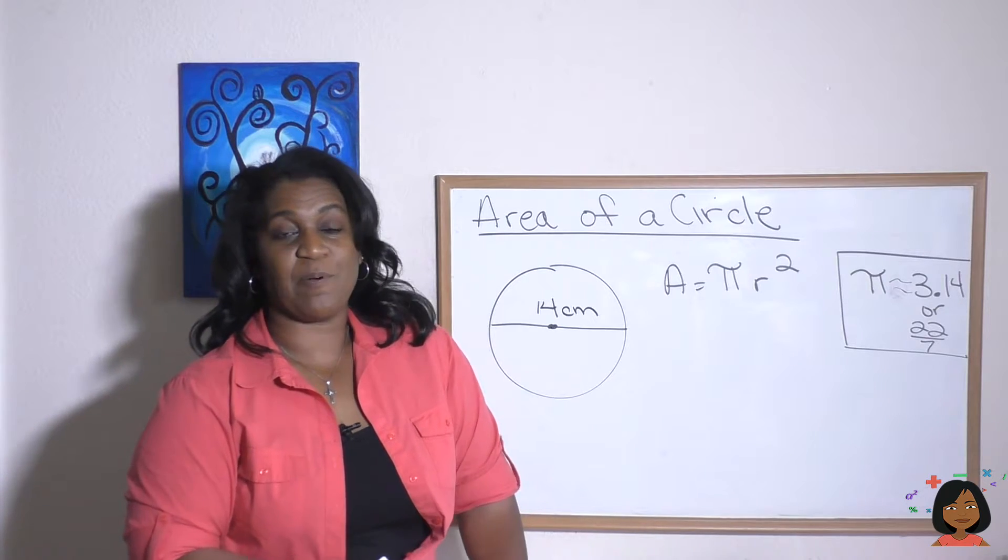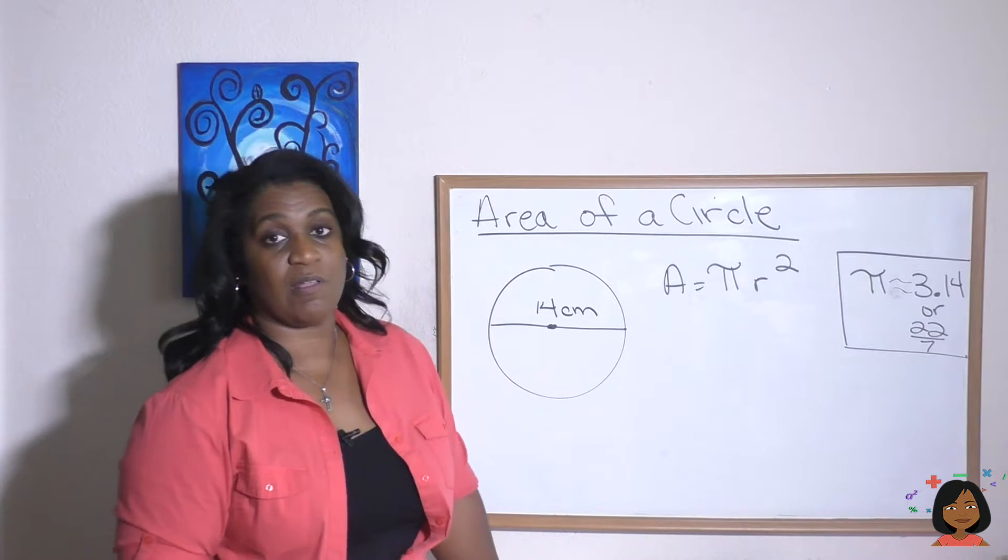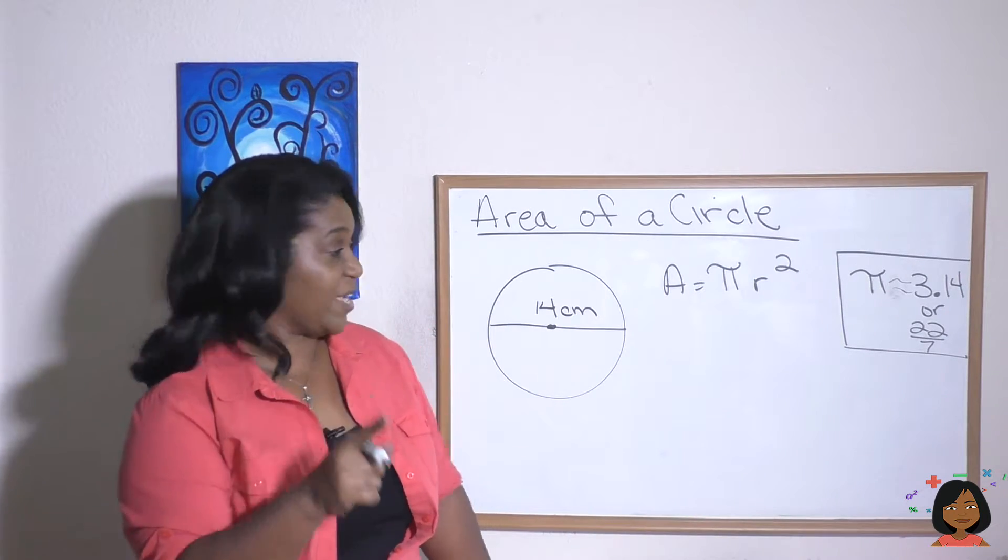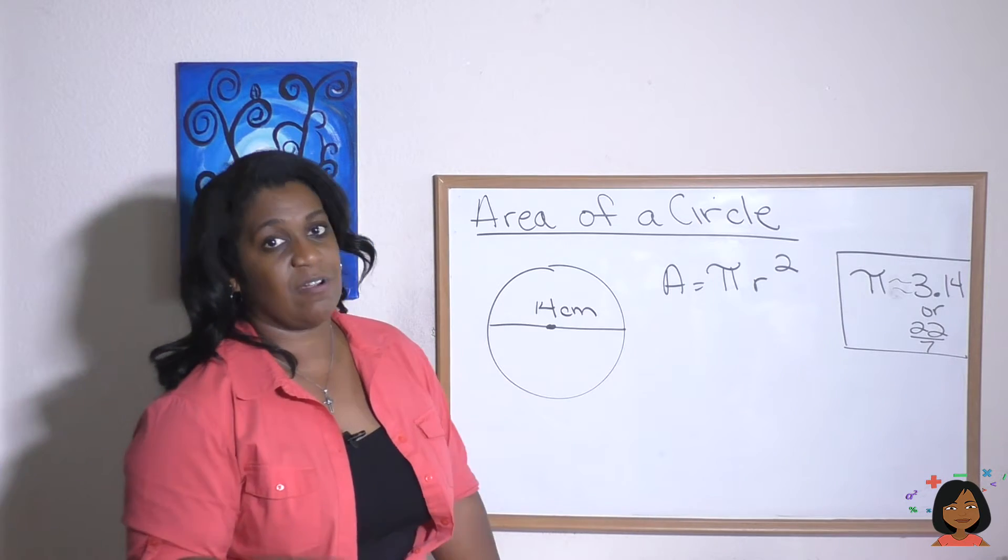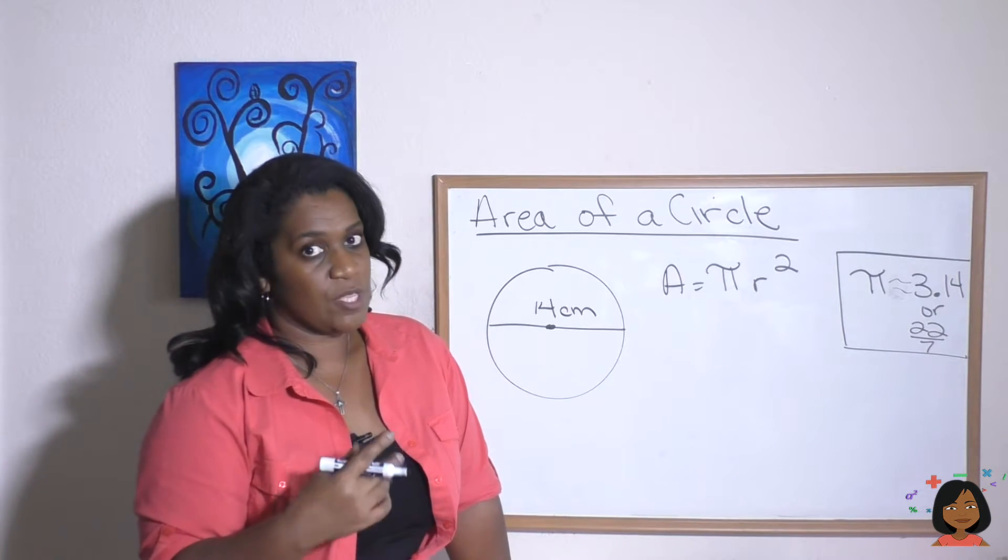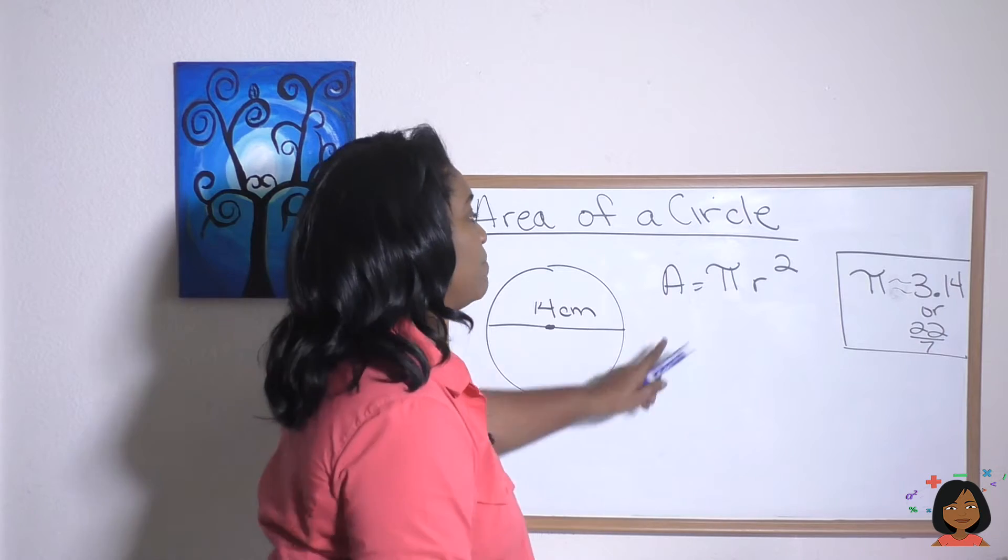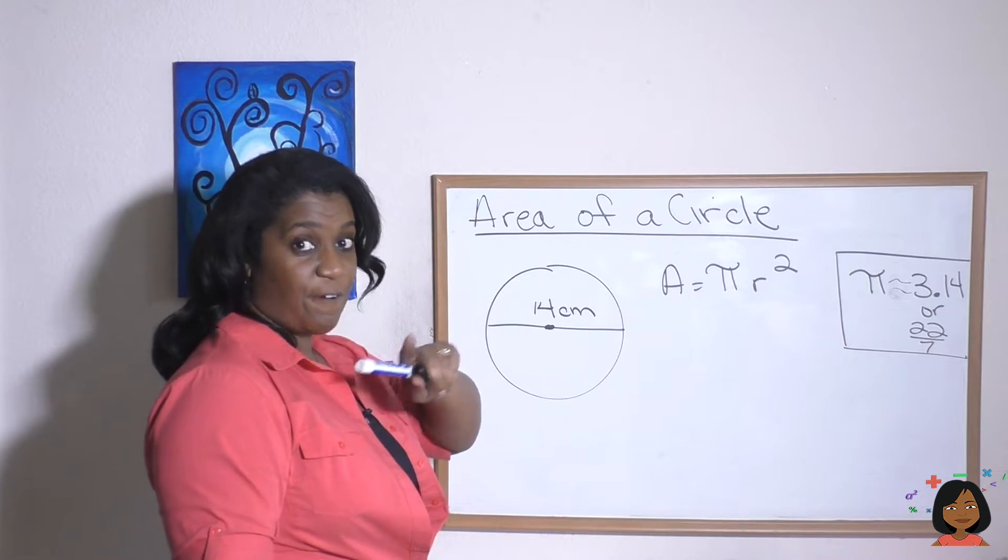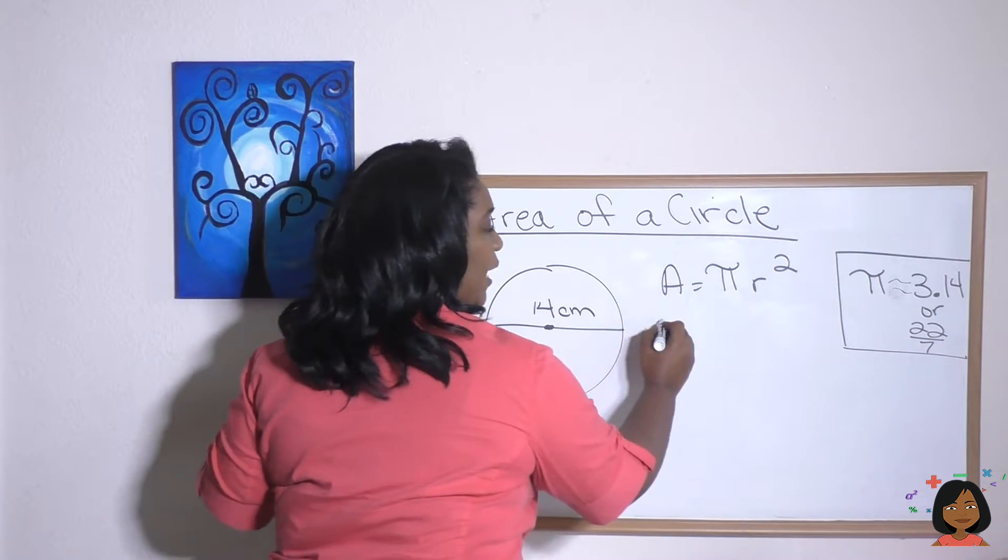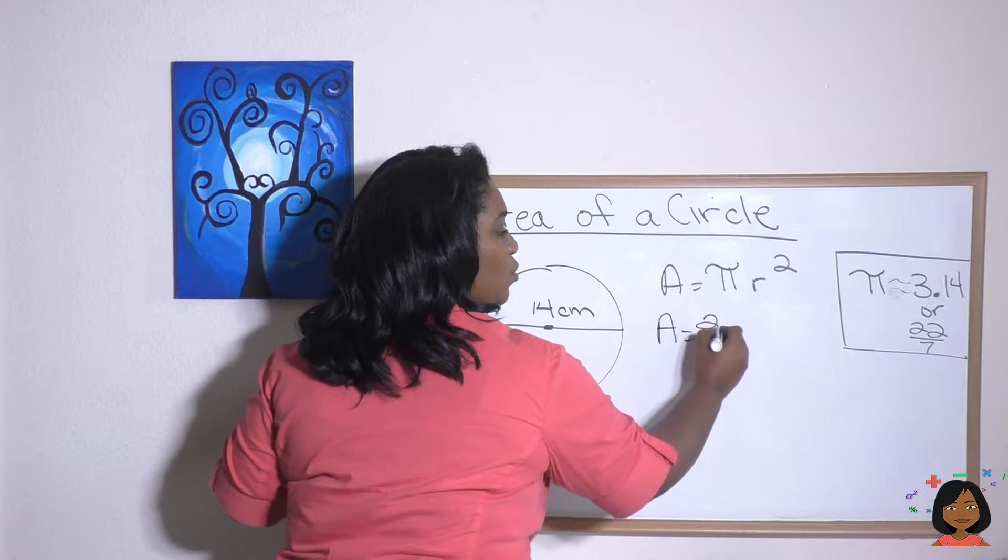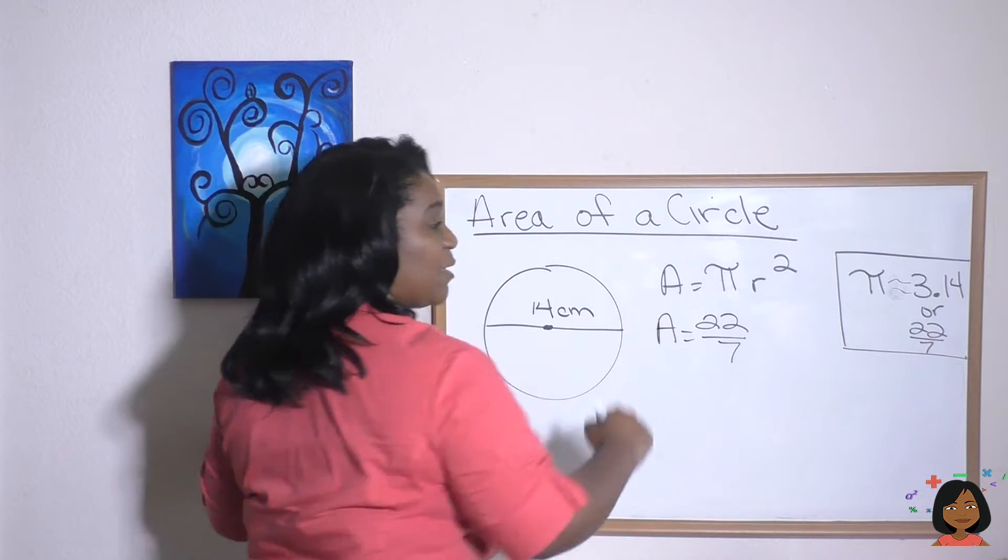Here's another example. This time I have a circle that has a diameter going from one edge to the other of 14 centimeters. So let's put it into our formula. This time I want you to use the fraction. So we're going to say area equals 22 sevenths times our radius.